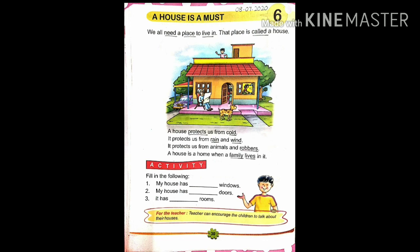Next: it has dash rooms. You should know how many rooms are in your house — just count the rooms. You can have two, three, four rooms. You will be able to count the windows, doors, and rooms and fill in the activity yourself. This activity you will be able to complete on your own.